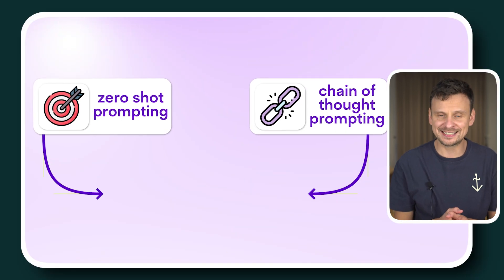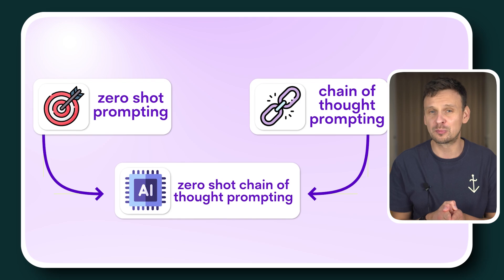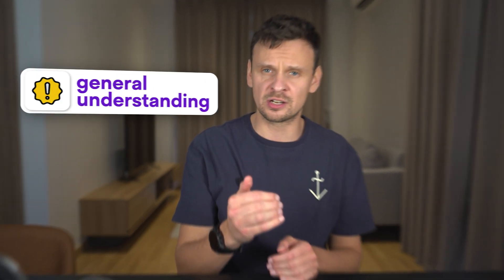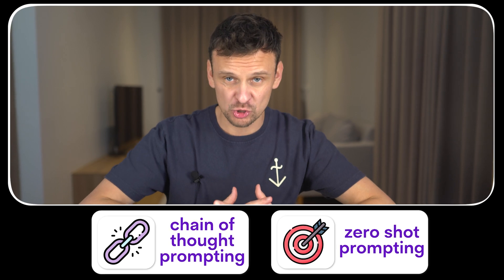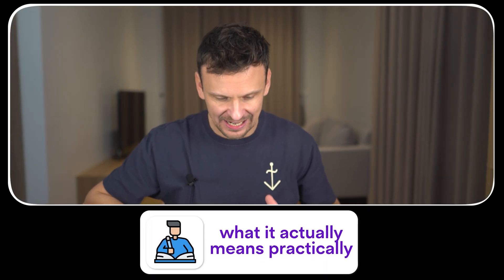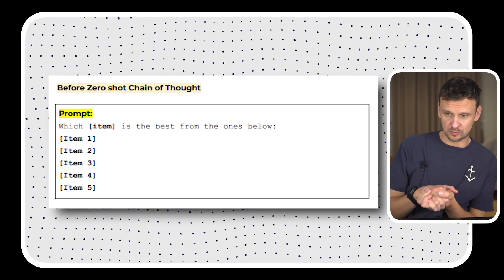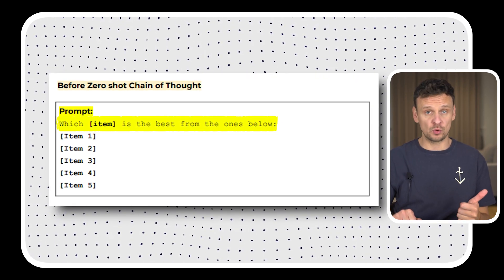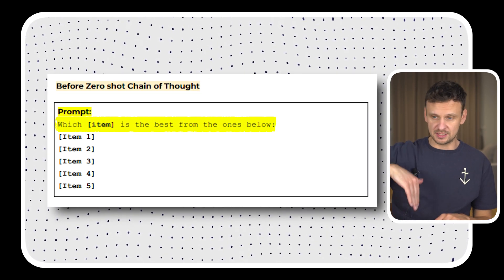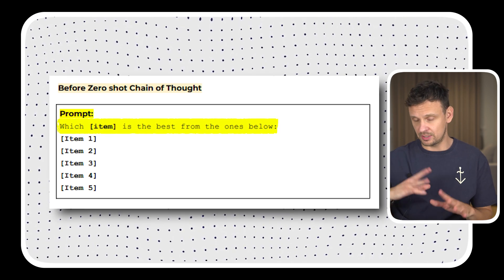When these two are combined into zero-shot chain of thought prompting, ChatGPT is prompted to use its general understanding and reasoning abilities to tackle new and unseen problems by logically working through them step by step. A basic prompt without this approach looks like: which item is the best from the ones below, followed by item 1, item 2, item 3, and so on.